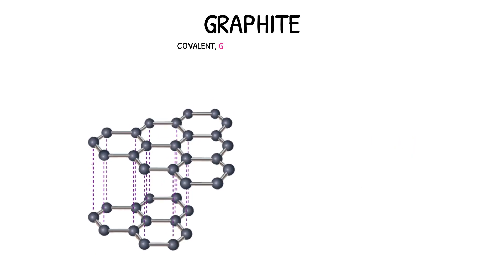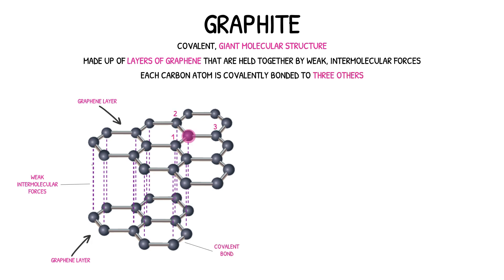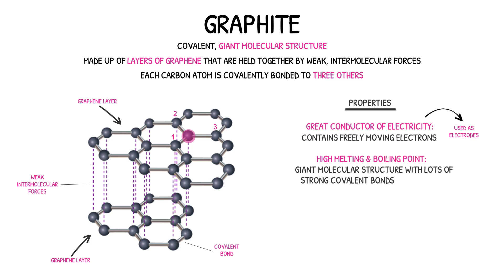Graphite is a giant molecular structure, consisting of many graphene layers held together by weak intermolecular forces. In this allotrope, each carbon atom is covalently bonded to three others. The freely moving electrons on the surface of each graphene layer are able to carry an electrical charge, making graphite an excellent conductor of electricity and explaining its common use for making electrodes. Graphite also has a very high melting and boiling point, because of the many strong covalent bonds between the carbon atoms, which must first be broken before the state of graphite can be changed.